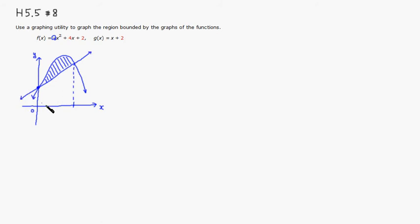First we need to find the points of intersection, which is right here, which we kind of know, and another point right there. So let's set these two equations together. We have negative x squared plus 4x plus 2 is equal to x plus 2.